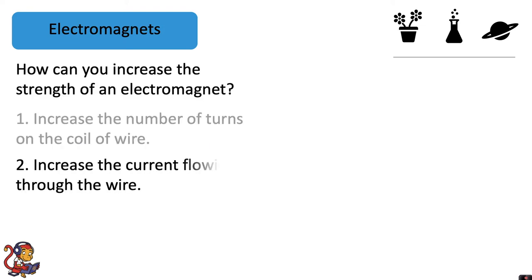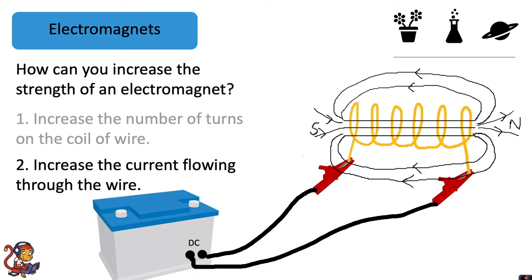The second thing you can do is increase the current flowing through the wire. To do that, you can increase the potential difference of your power supply. There will often be a dial on your power supply. If you increase the potential difference, then you will also increase the current that is flowing through the wire.